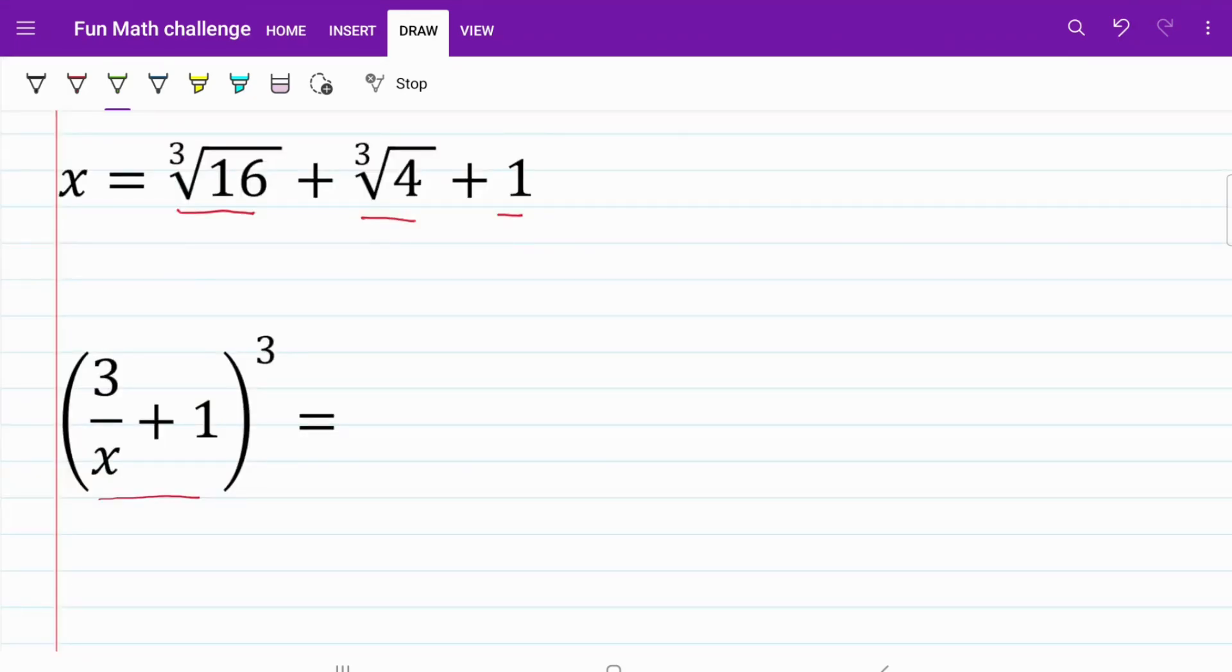When we try to solve questions like this, a good starting point is always to look for ways to do substitution or factorization. Let's go ahead and look at this part right here. The first thing that should be obvious to us is the relationship between 16 and 4. Obviously, 16 is equal to 4 squared. So let's see whether we can make use of this fact.